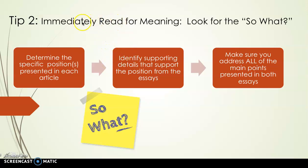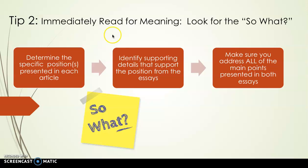Tip two: immediately read for meaning and look for the 'so what.' As you're doing that reading comprehension with those two essays, you want to make sure you're determining the specific position presented in each of the articles — they are going to vary. Then identify the details that support the position from both essays and make sure you address all of those main points. On the Praxis Core, you are expected to put forth an argument showing that you truly understand what both authors are saying and that you can synthesize the information.